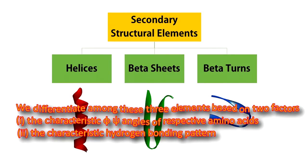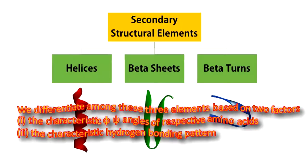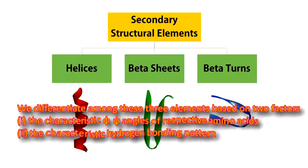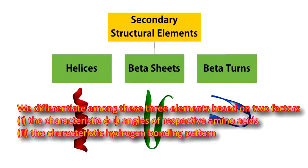We differentiate among these three elements based on two factors: one, the characteristic phi-psi dihedral angles of the respective amino acids, and two, the characteristic hydrogen bonding pattern.